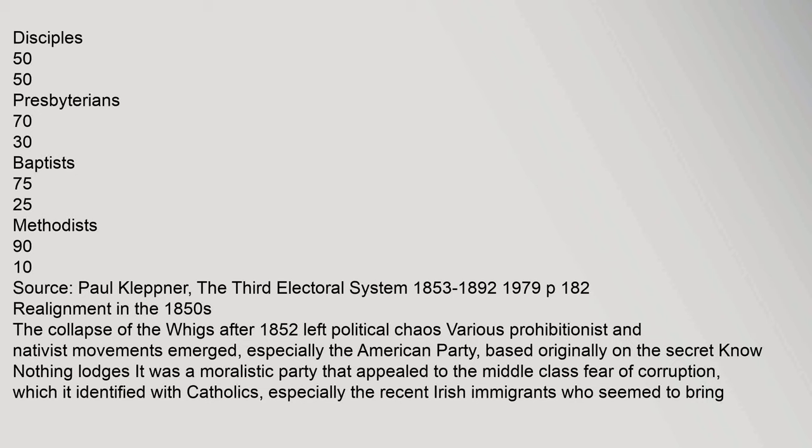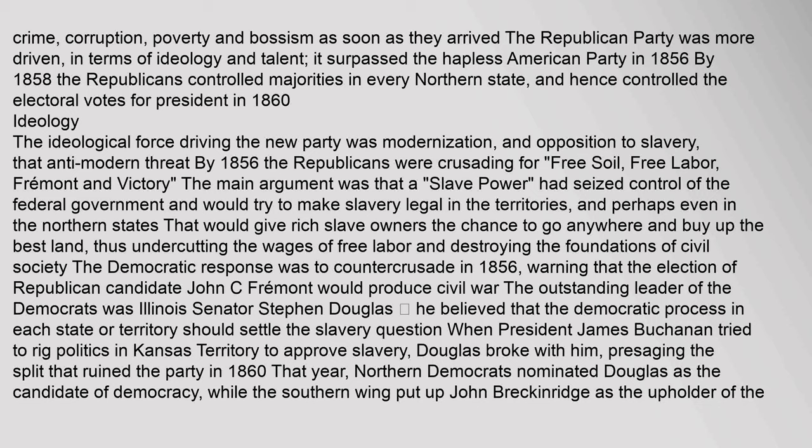Realignment in the 1850s: The collapse of the Whigs after 1852 left political chaos. Various prohibitionist and nativist movements emerged, especially the American Party, based originally on the secret know-nothing lodges. It was a moralistic party that appealed to the middle-class fear of corruption, which it identified with Catholics, especially the recent Irish immigrants who seemed to bring crime, corruption, poverty, and bossism. The Republican Party surpassed the hapless American Party in 1856, and by 1858 controlled majorities in every northern state.